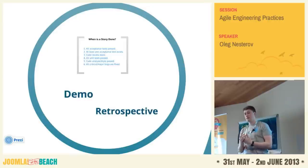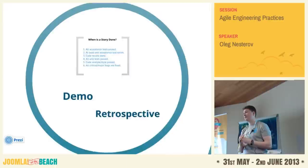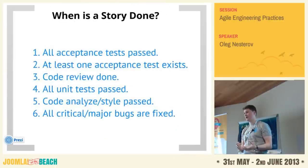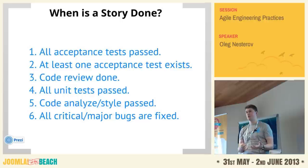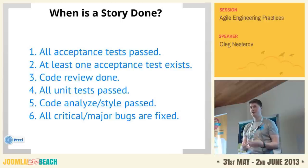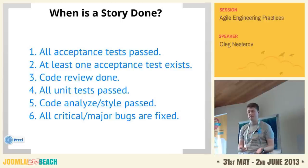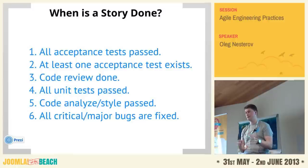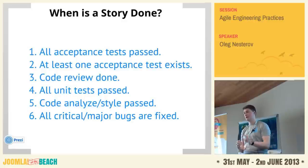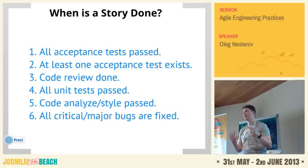When the sprint is done, you can do a retrospective meeting — a very powerful thing. You sit together with your team and think about what you can do better next time. Each member can say what was done wrong and what they'd like to see in the next iteration. Do this every two weeks if you're doing two-week sprints. A story is done when all tests pass, you have at least one acceptance test, code analyzers and style checkers pass, and all critical and major bugs are fixed.